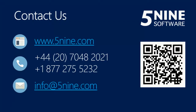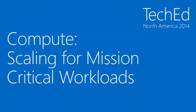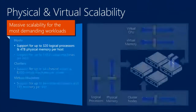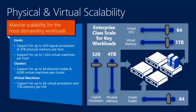One of the things we've been very focused on is making sure you can run whatever workload you want in your private cloud. Scaling for mission-critical workloads is something we focused on back in 2012. We support up to 320 logical processors — that's a 16-socket server, each with 10 cores and symmetric multi-threading. We support up to 4 terabytes of physical memory per host and up to 1,024 VMs.